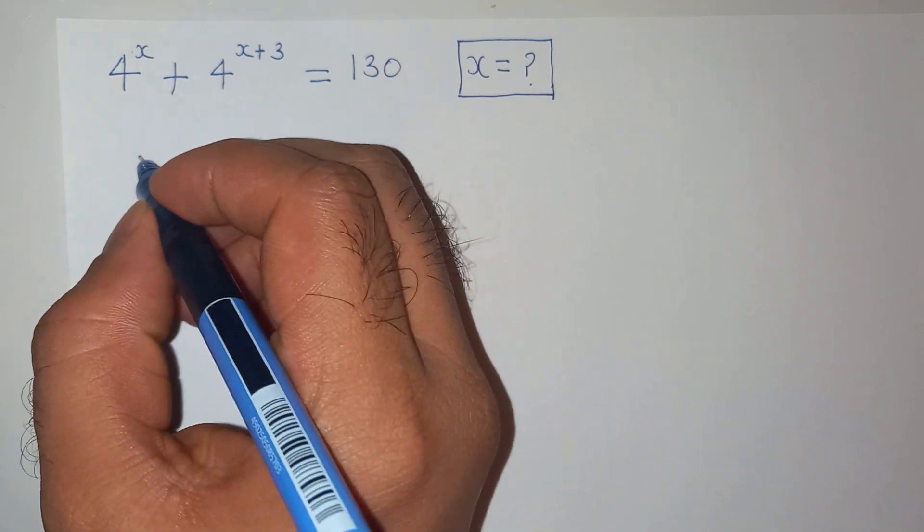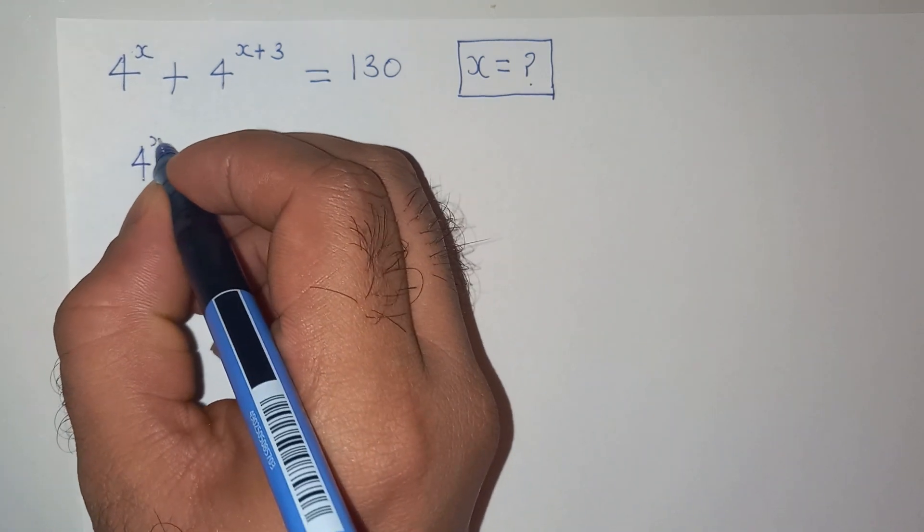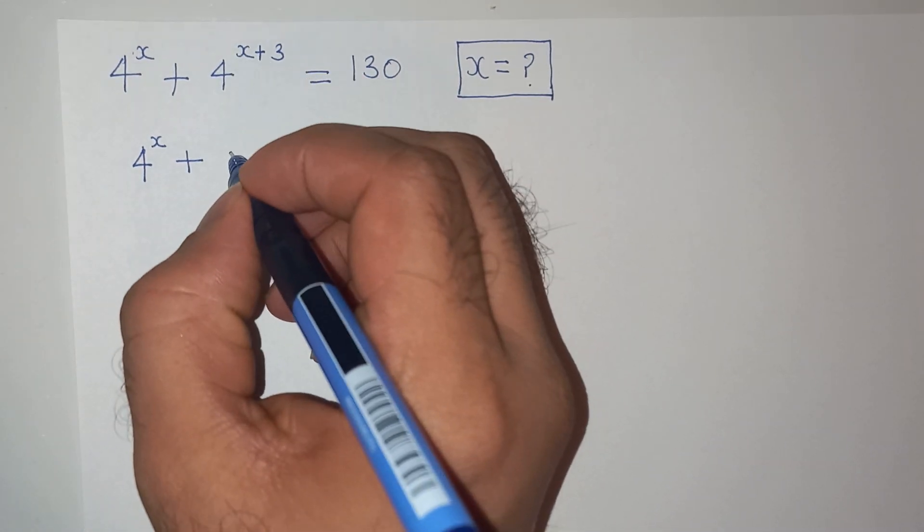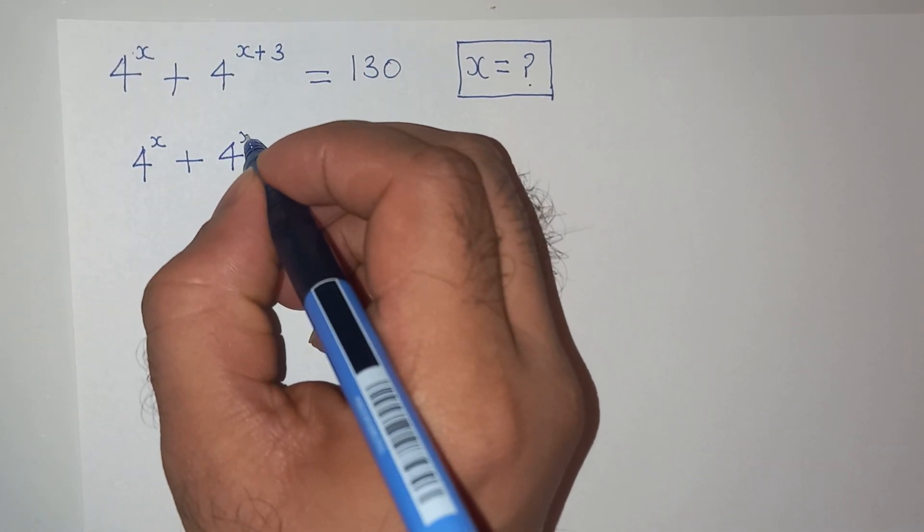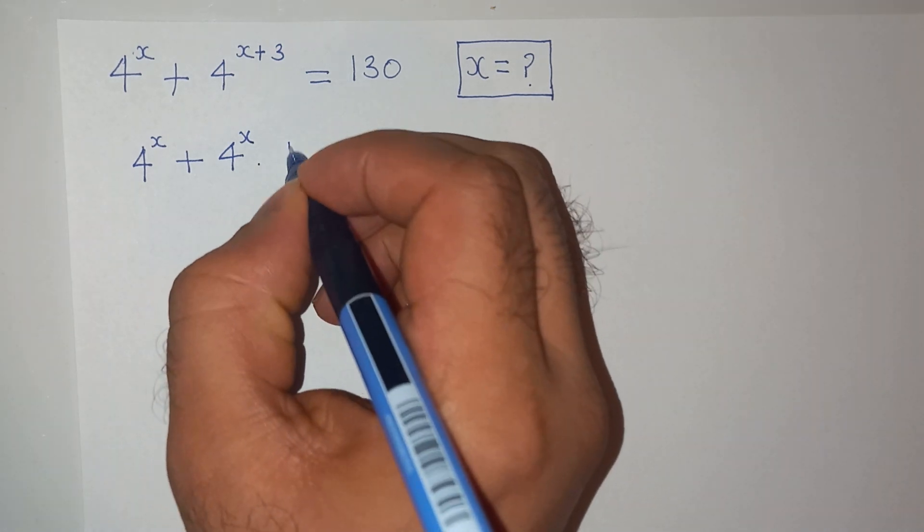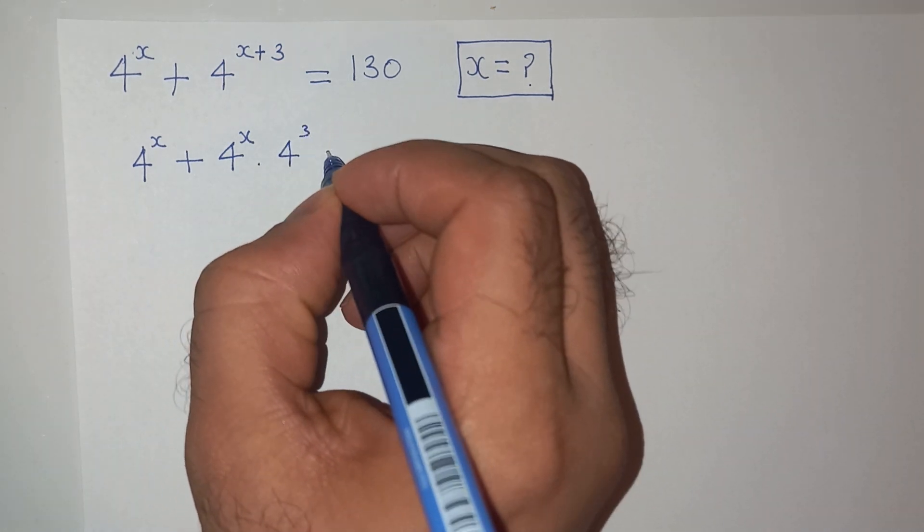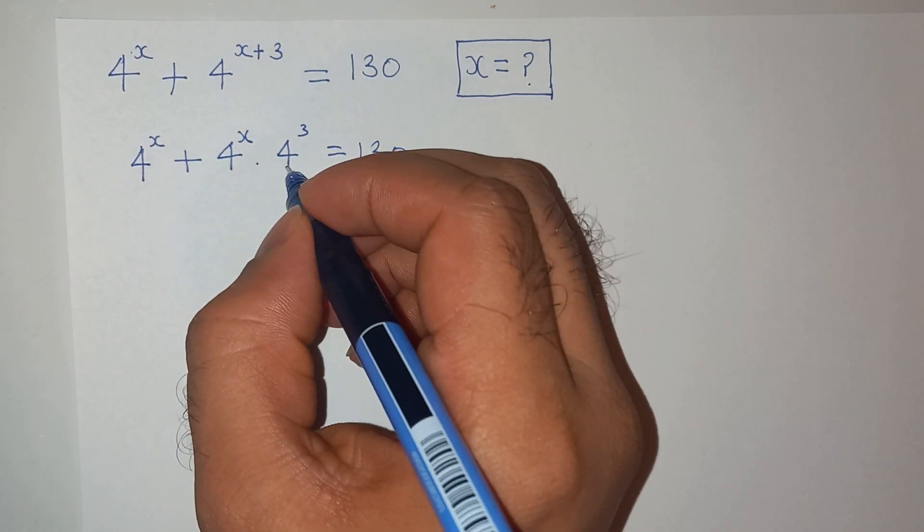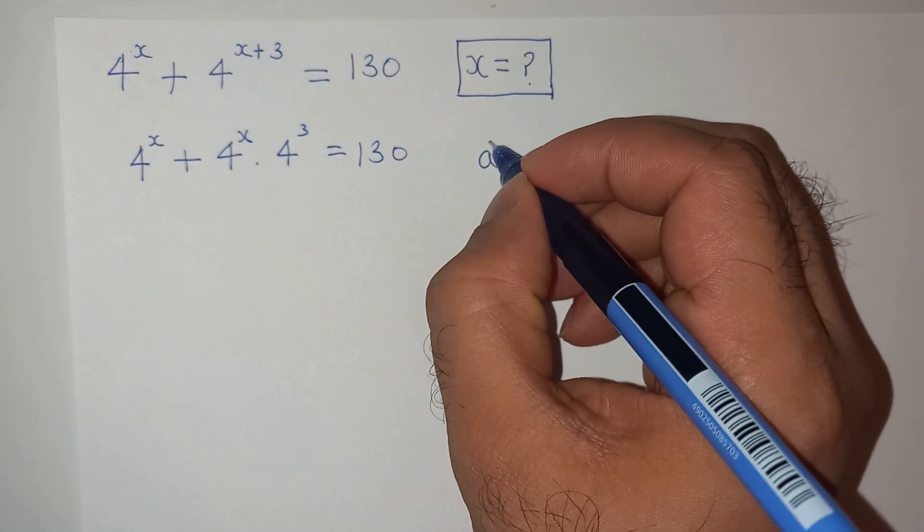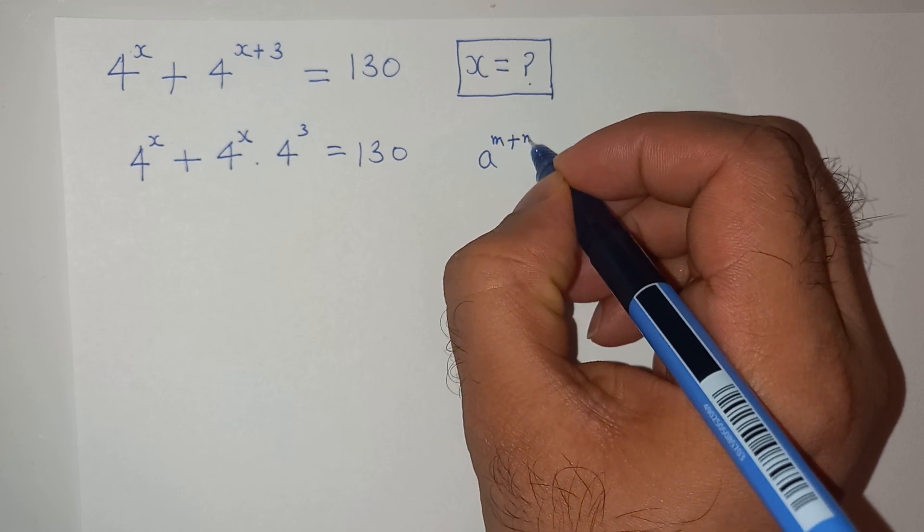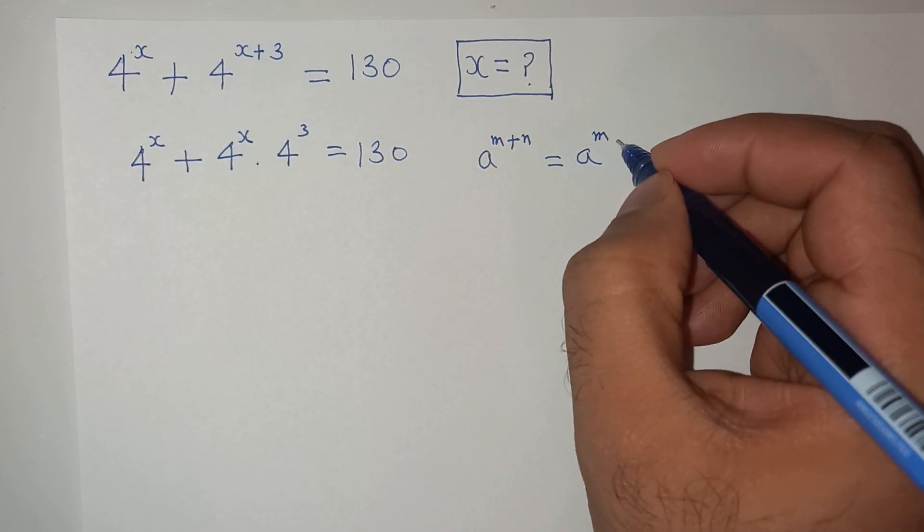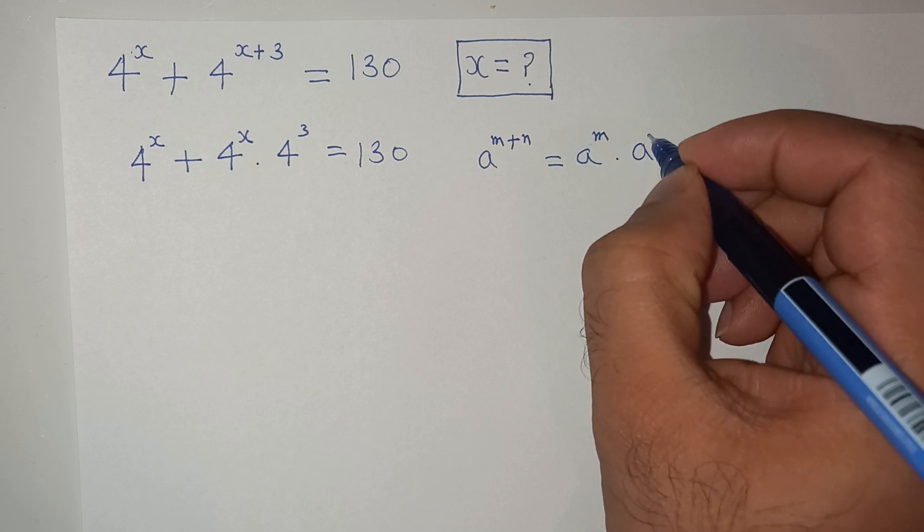We can write the above equation as 4 power x plus 4 power x plus 3 can be written as 4 power x multiplied 4 power 3, equals to 130. This is as per this exponential rule which is a power m plus n equals to a power m multiplied a power n.